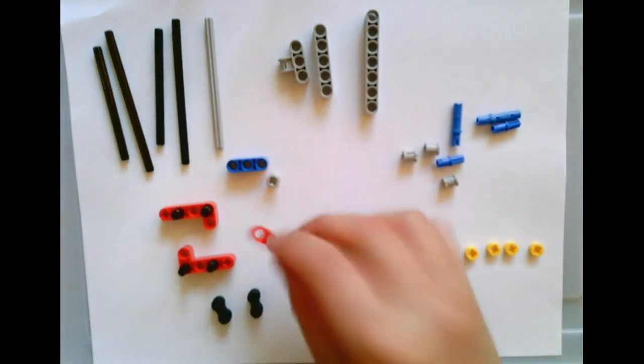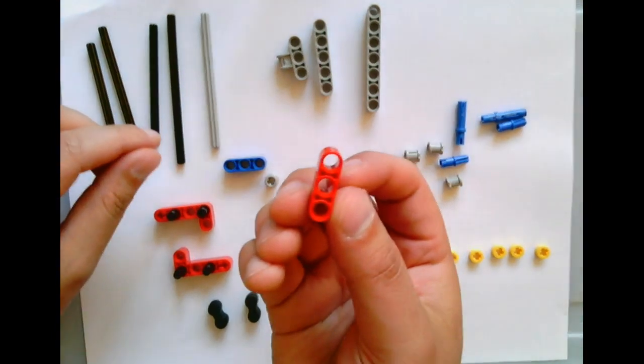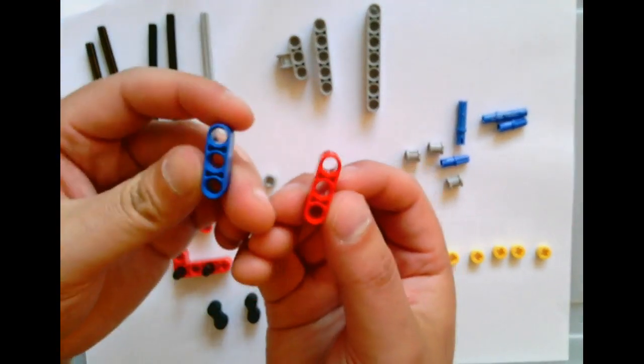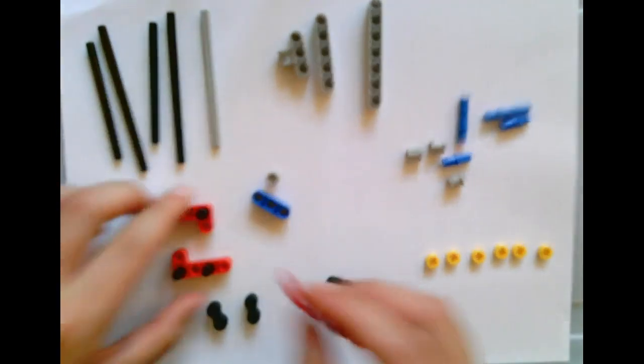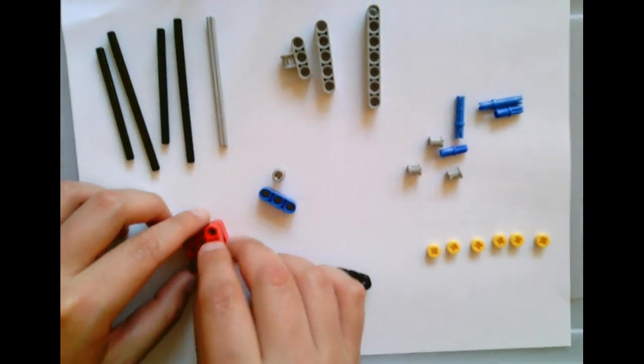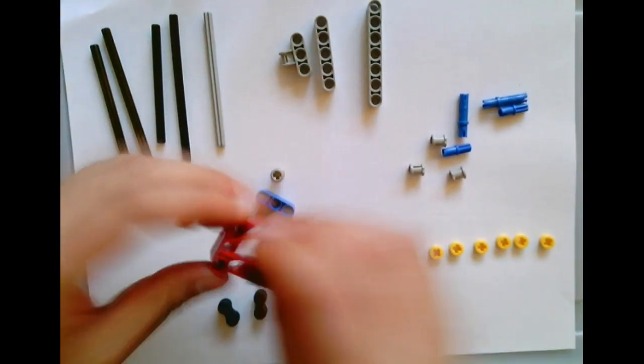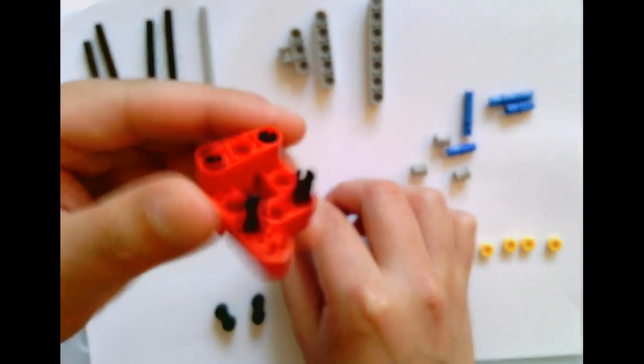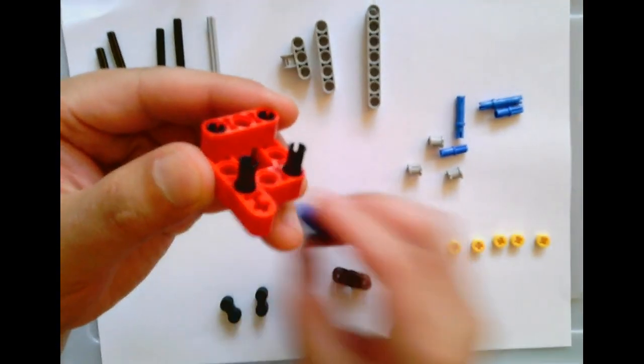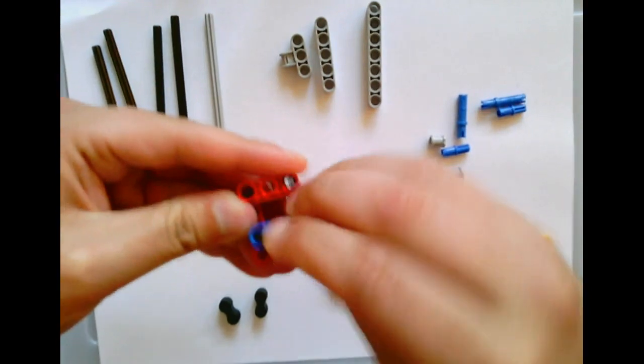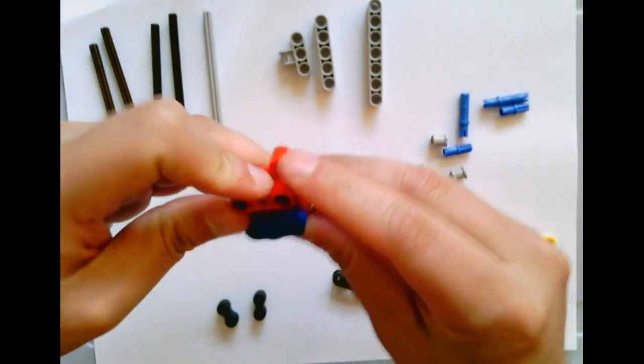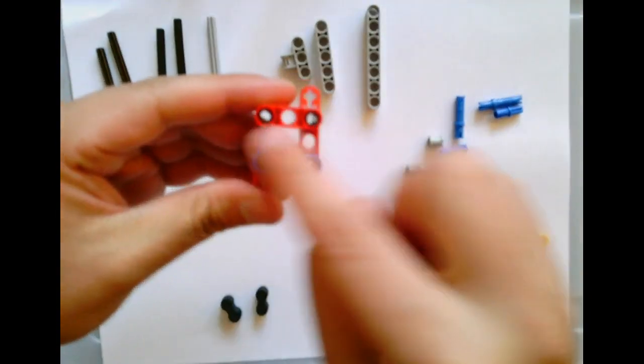Then you can use any three piece like this, either red, blue or yellow, and you're going to connect them like so. I'm using different colors to show you that you don't need a specific color as long as it's got the three holes.